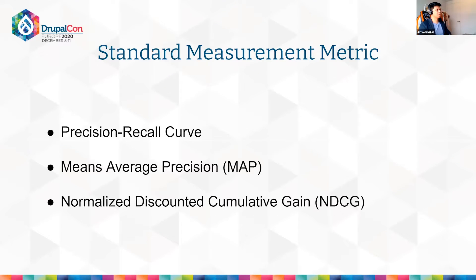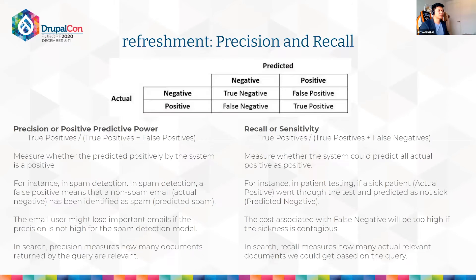We have three standard measurement metrics: the first is precision and recall, the second is mean average precision, and the third is normalized discounted cumulative gain. These are pretty technical terms, but I'll walk you through them with case studies so hopefully it'll be clear by the end. Before that, I asked in the poll how many of you know the difference between precision, recall, and accuracy.